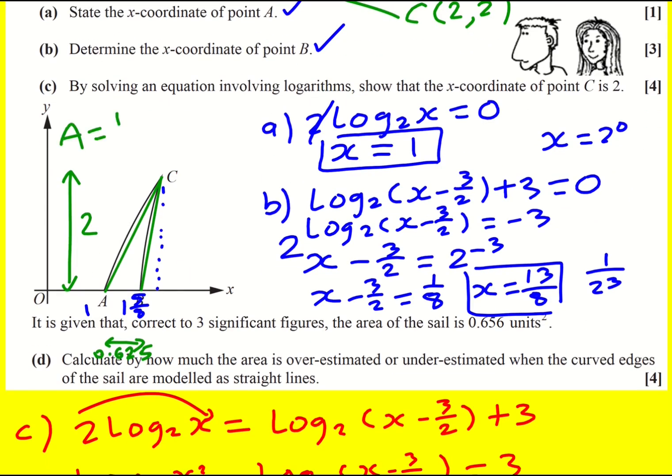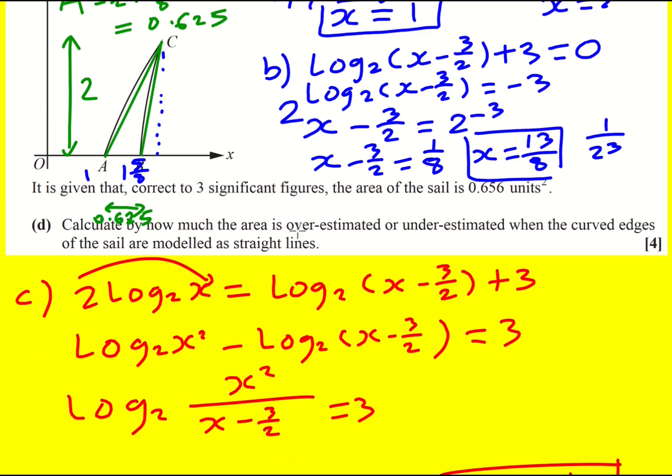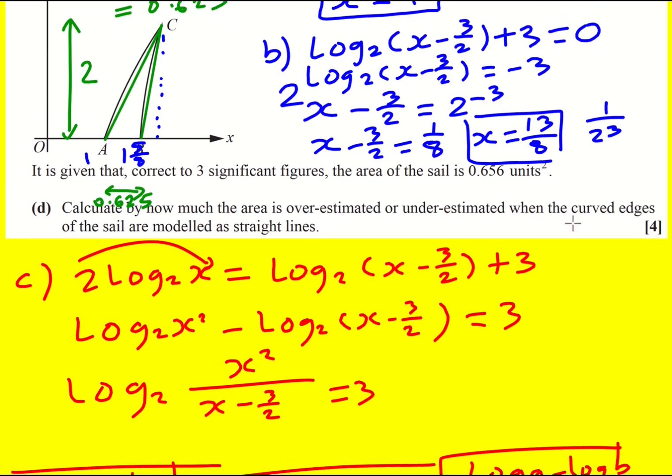Therefore, the area is going to be a half times the base, which was 0.625 or 5/8, times the height, which is 2. So if we use straight lines, we're going to get an underestimate.